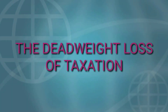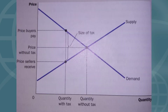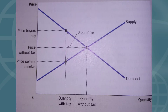The Deadweight Loss of Taxation. It doesn't matter whether a tax on a good is charged on buyers or sellers of the good. When a tax is charged on buyers, the demand curve shifts downward by the size of the tax. When it is charged on sellers, the supply curve shifts upward by that amount. In either case, when the tax is enacted, the price paid by buyers rises and the price received by sellers falls. In the end, buyers and sellers share the burden of the tax regardless of how it is charged.